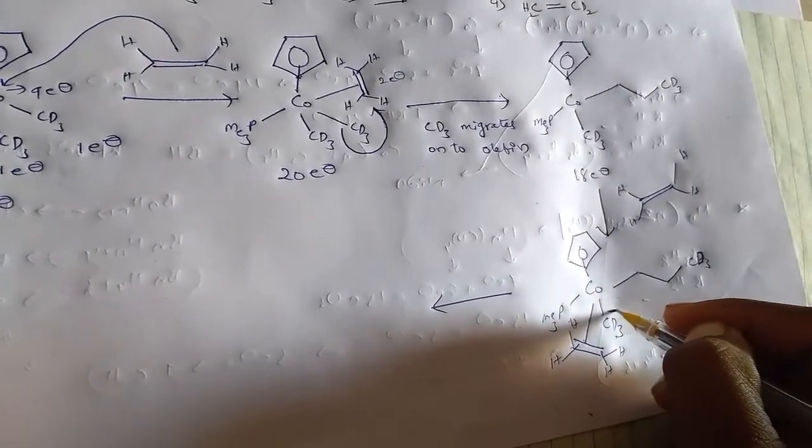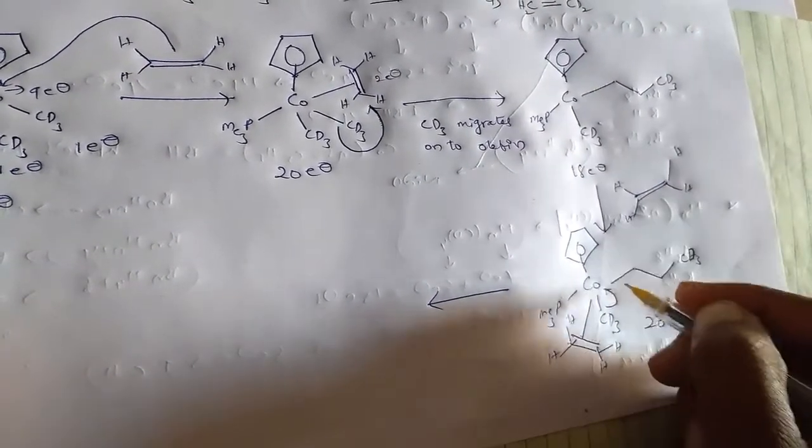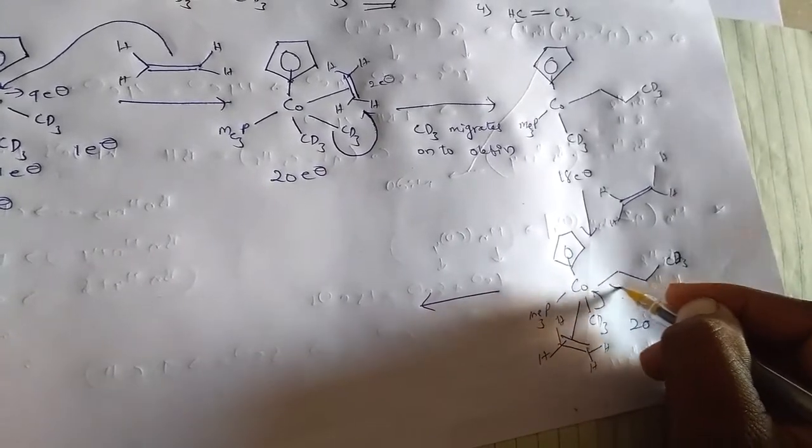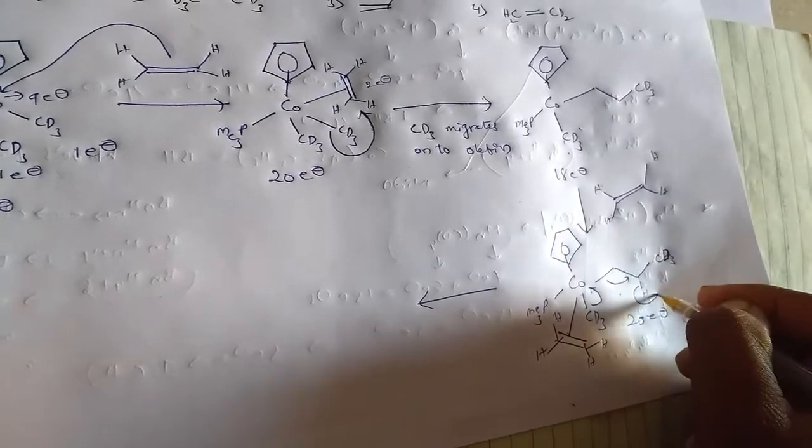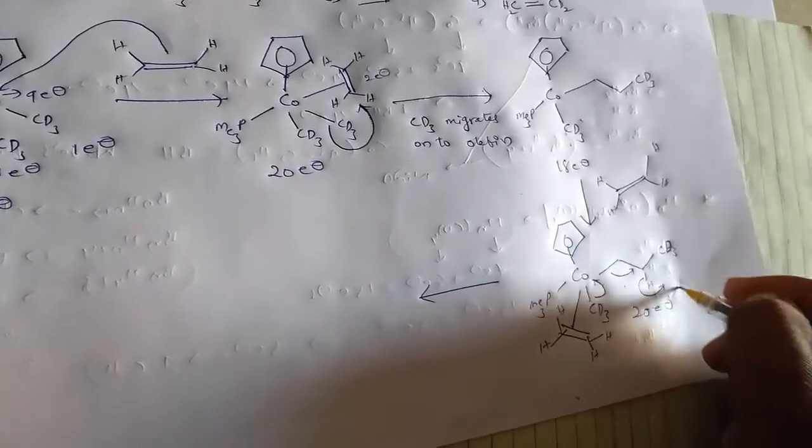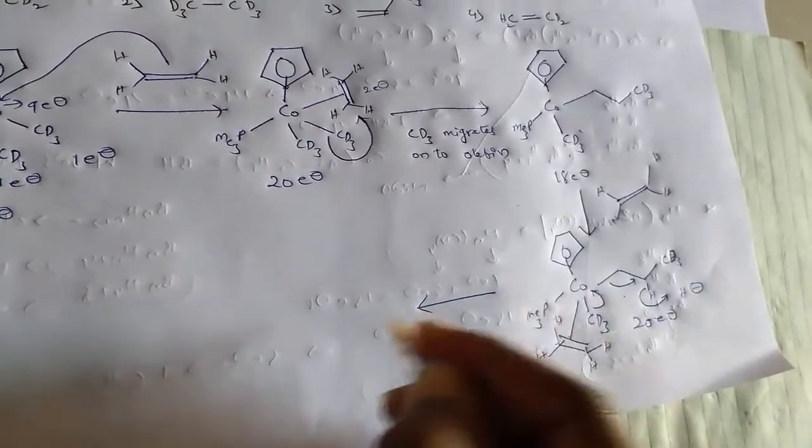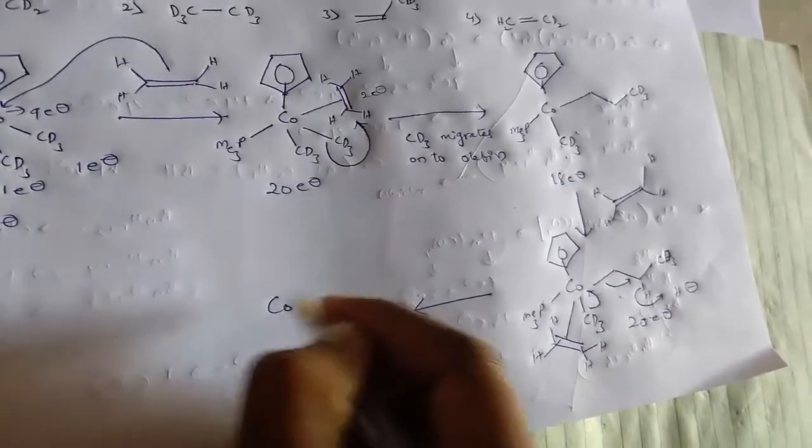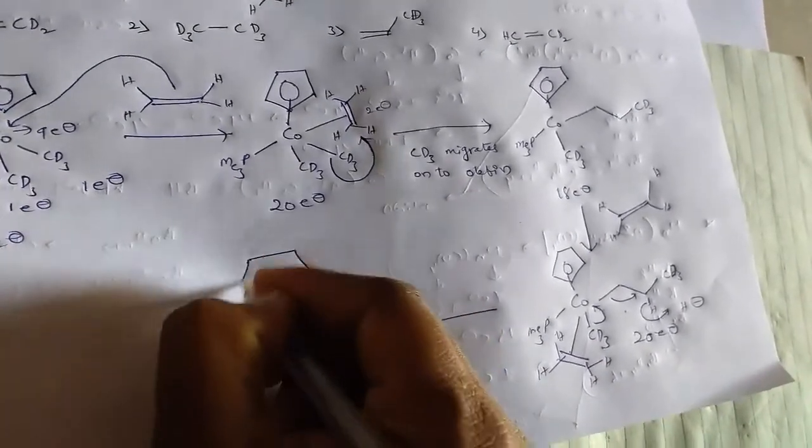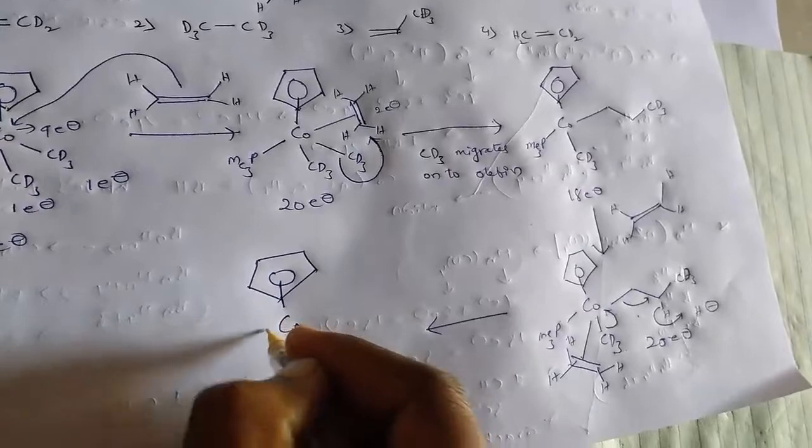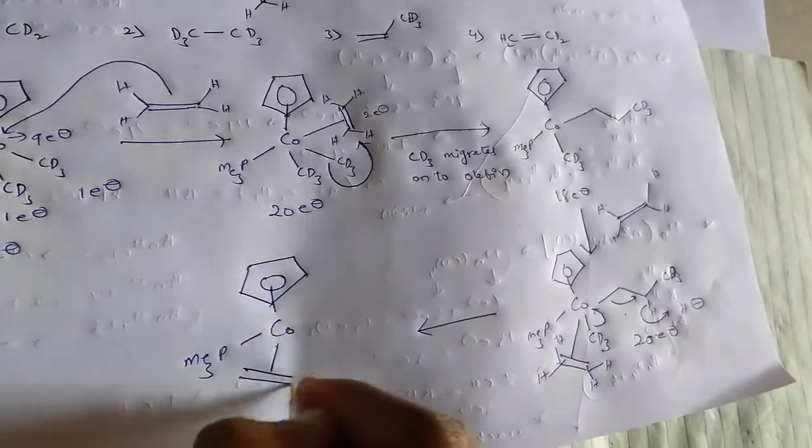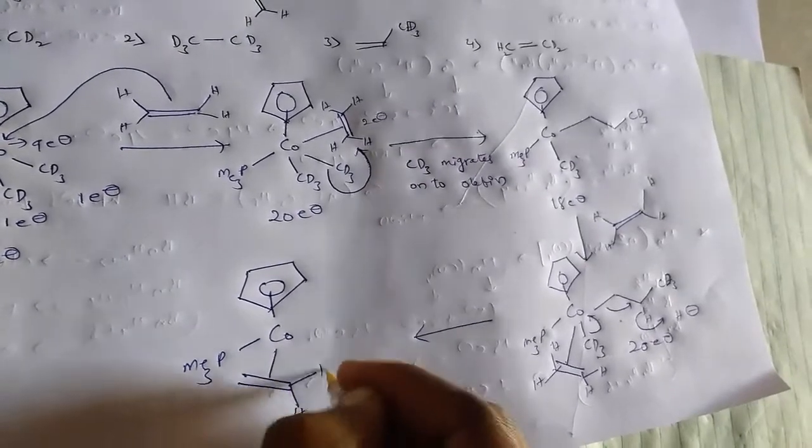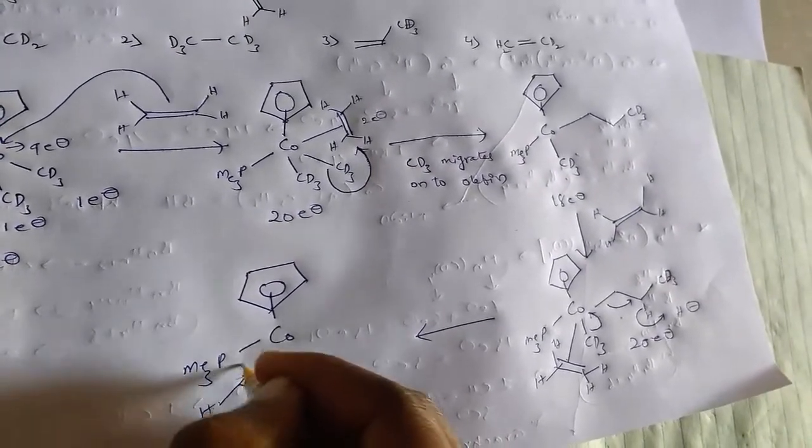This CD3 goes on cobalt. And this bond goes on it. And the hydrogen, it leaves as hydride ion. From that, we get...